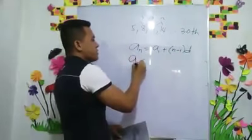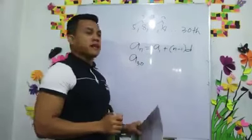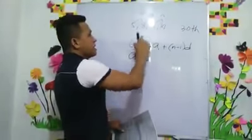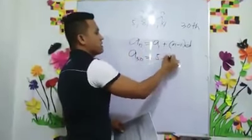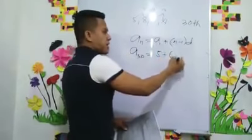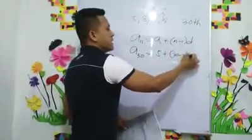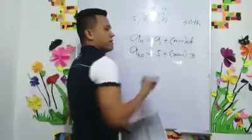So our A30, because we are asked to find the 30th term, we have A30. A1 is 5, plus 30. Our N is 30, so 30 minus 1, times the difference of 3.